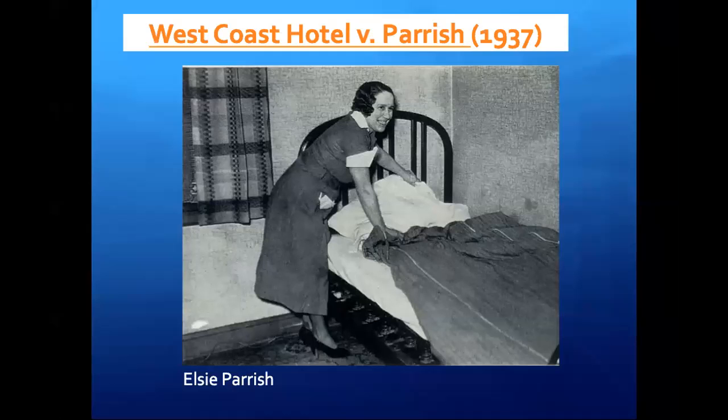The key case here is the 1937 case of West Coast Hotel versus Parrish. This case involved a woman named Elsie Parrish. She was a 30-something, twice married, once divorced mother and grandmother. And she lost her job as a chambermaid and brings a lawsuit seeking to be paid her back wages that would be in line with the state's law that required a minimum wage for women.